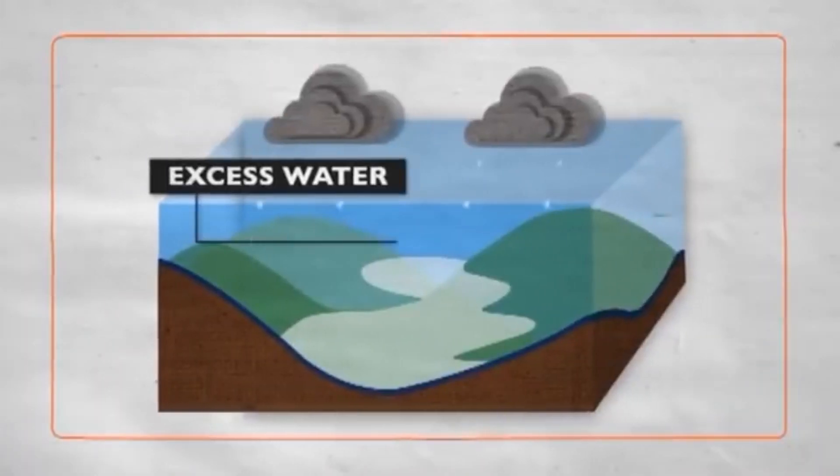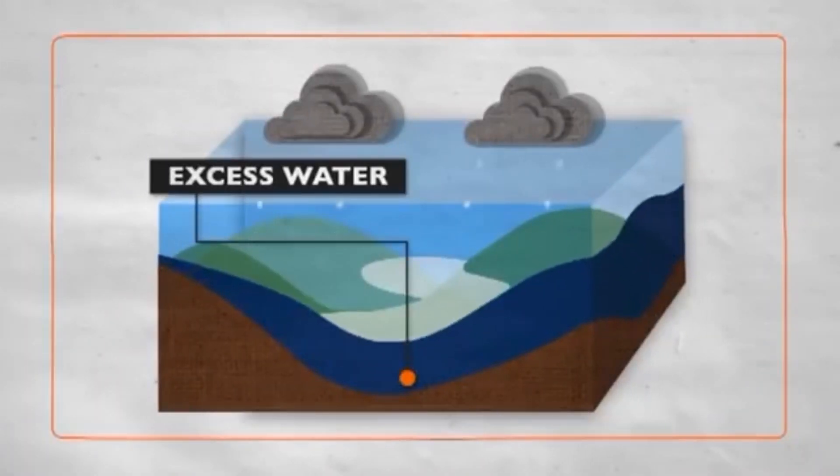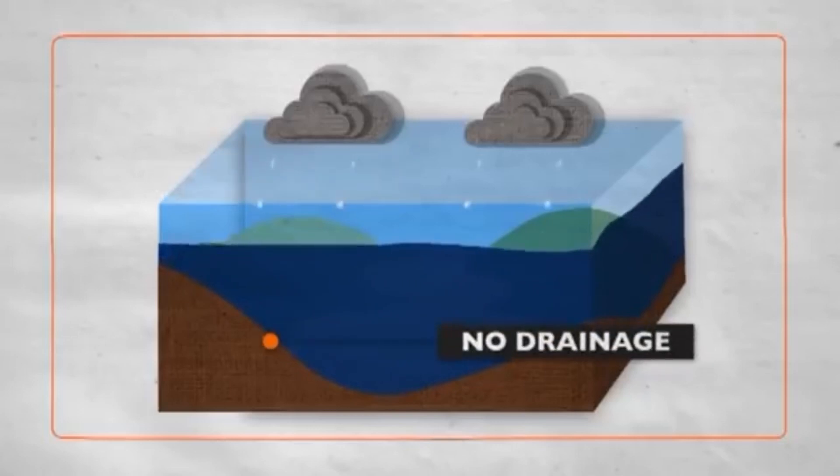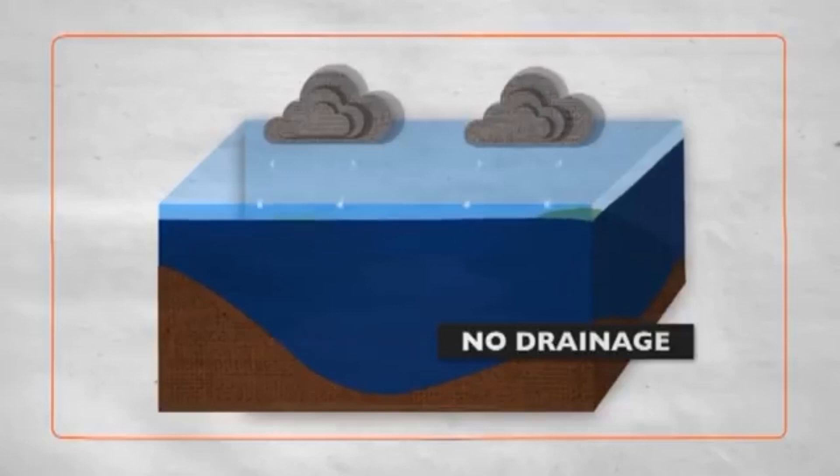Floods occur when excess water has nowhere to go. They are worse when the area doesn't have proper drains, but even advanced stormwater systems can be overwhelmed by a lot of rain in a short amount of time.